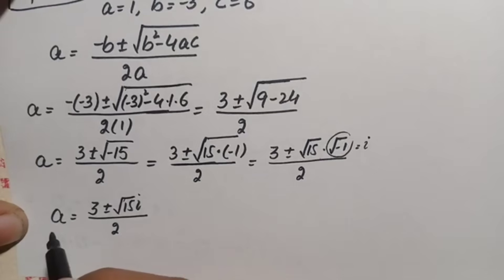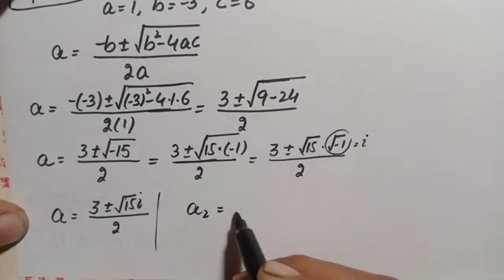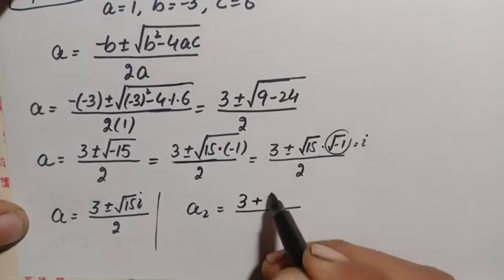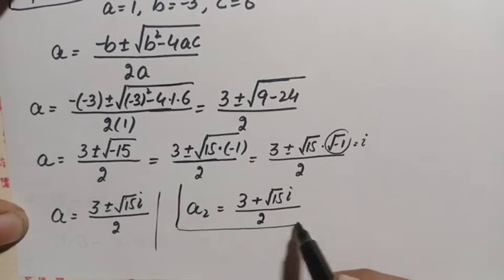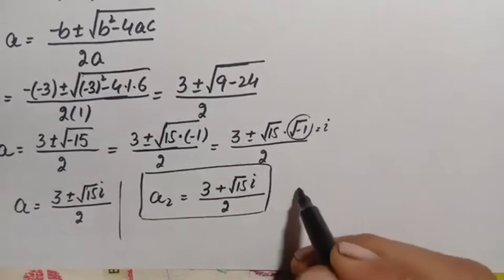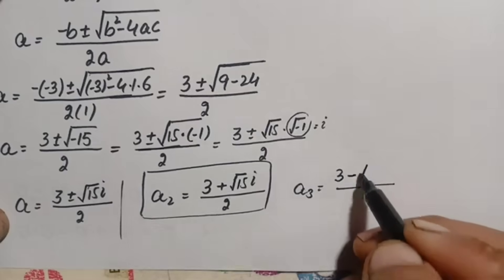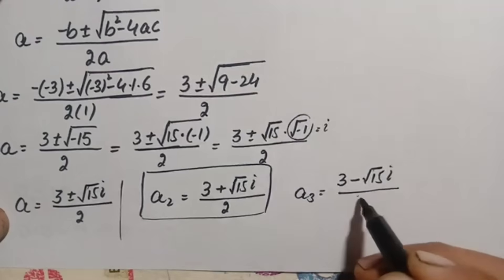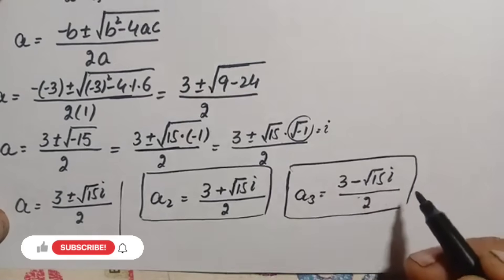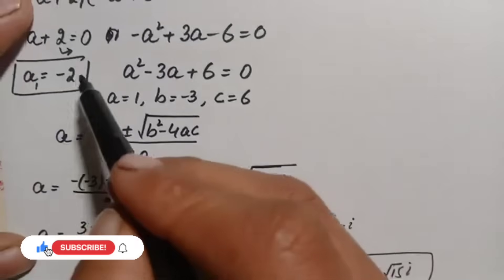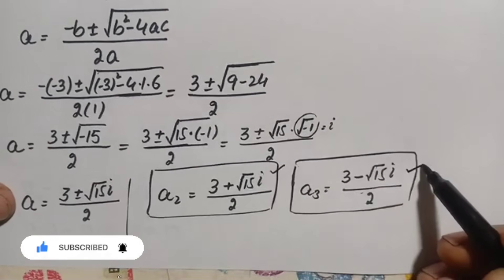We have two complex values of a. The second solution is a₂ equals 3 plus the square root of 15 i, divided by 2, and the third solution is a₃ equals 3 minus the square root of 15 i, divided by 2. Finally, we have three solutions: a₁ equals negative 2 (real), and a₂ and a₃ are complex conjugates.